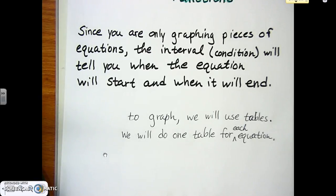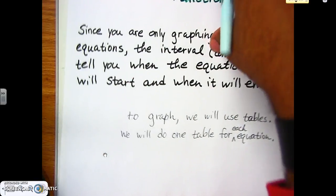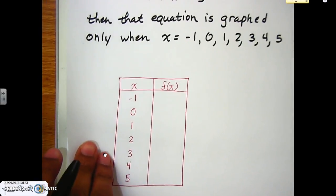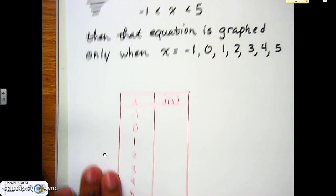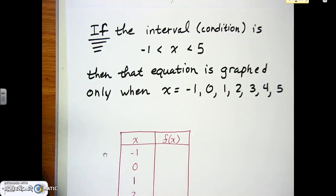So if there are three equations, you do three tables; if there are four equations, you do four tables. Now, just before we go into setting everything up, let's take a look at some other information.